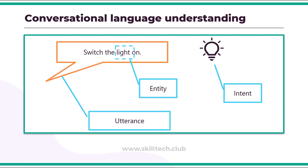This utterance might be entered in a chatbot by a user. Then we find entities associated with it. Entities are specific items referenced in an utterance — for example, 'light' is an entity in that statement. If you say 'Switch the fan on,' then 'fan' is the entity. After this, you find the intent associated with the utterance. An intent identifies the desired action — for example, 'switch something on' is the intent, applied to the 'light' entity.